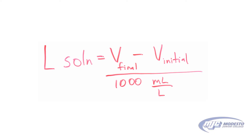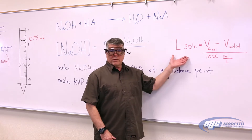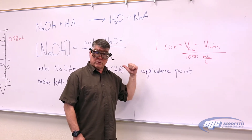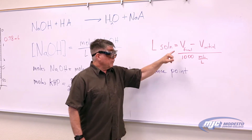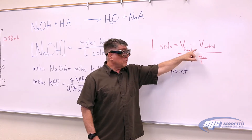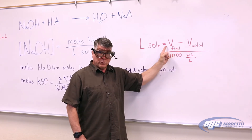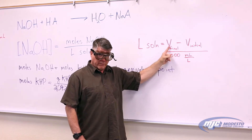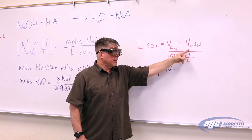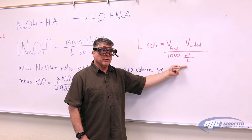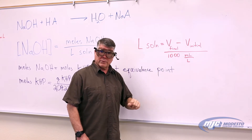The liters of solution — the denominator in the equation for the concentration of sodium hydroxide — is just the final volume minus the initial volume in milliliters. These numbers we read from the burette, the final end volume and the starting volume, and we divide by a thousand milliliters per liter to convert it to liters.